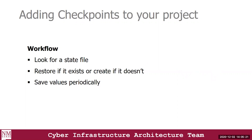How do we add checkpoints? There are three workflows. First, you want to look for a state file — have an if statement or try-catch block that checks to see if a state file exists. If that state file doesn't exist, the next step would be to either create or read the state file. The final step is to save the values or the output of your program periodically, so that in the event of an interruption, you wouldn't have to start all over again.